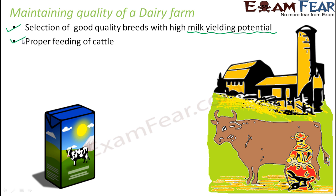Next is proper feeding of the cattle — this is extremely important. The more nutritious food the cow eats, the better the quality of the milk, and the benefit goes to us since we consume that milk. So we need to ensure the cow is fed properly. Fodder, which is mostly the food for cows, should be of good quality and given in sufficient quantity. If the cow does not get sufficient food it will starve, become weak, and the milk produced will decrease in both quantity and quality. So proper feeding is extremely important.